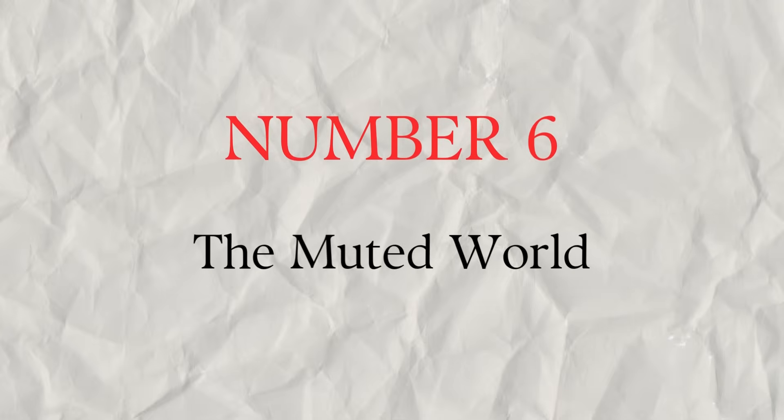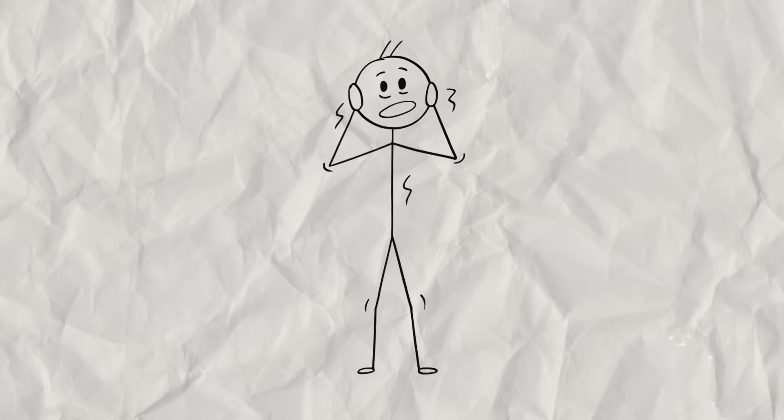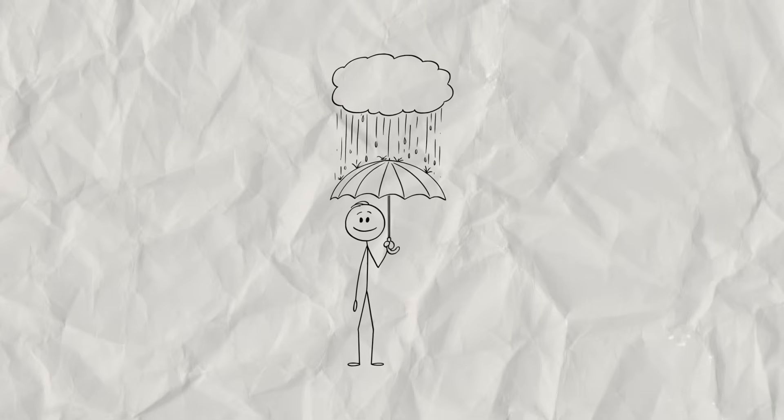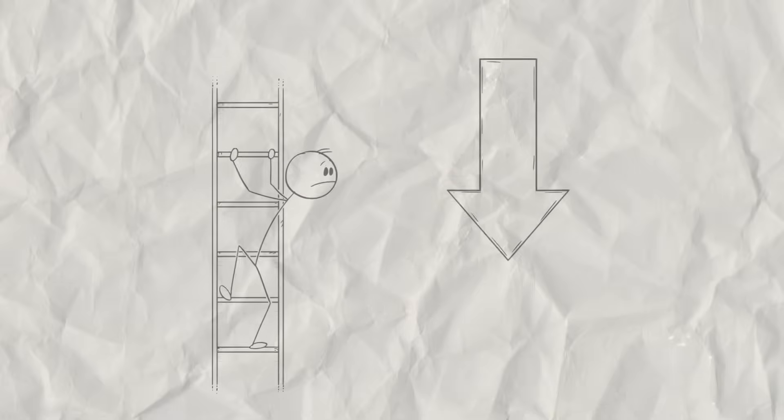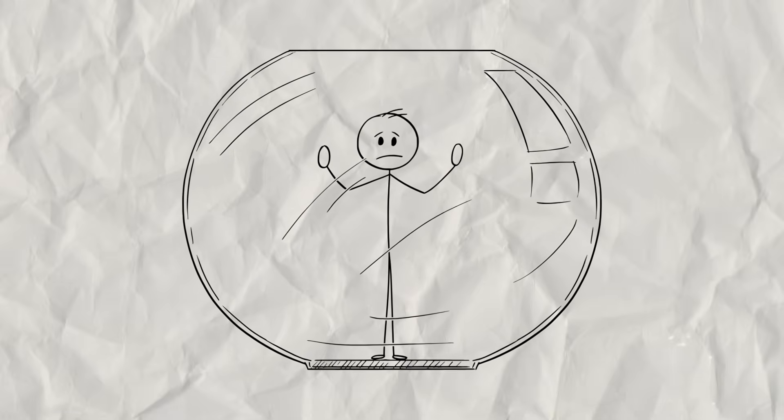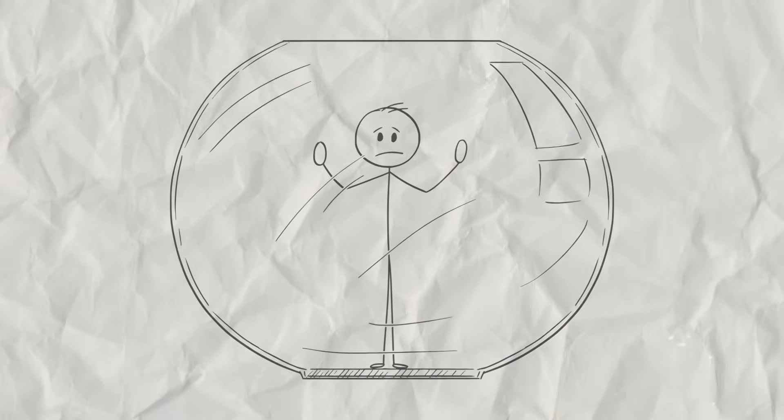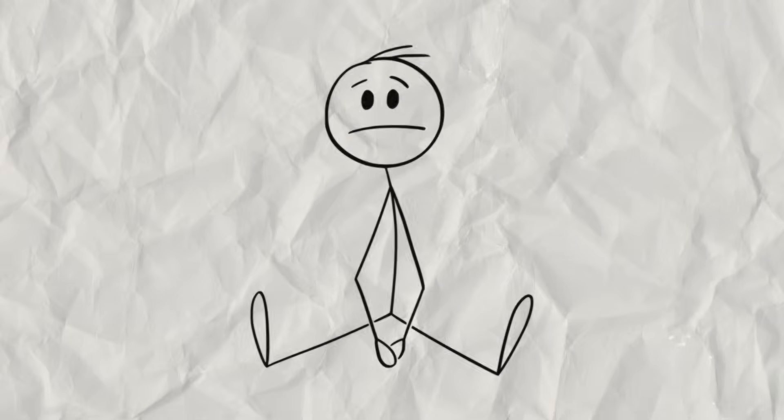Number six, the muted world. What happens when a part of your brain is screaming in pain 24-7? Sometimes the only way to cope is to turn the volume down, way down. The brain, in a desperate attempt to protect you from the overwhelming pain of the trauma, can decide to numb everything.